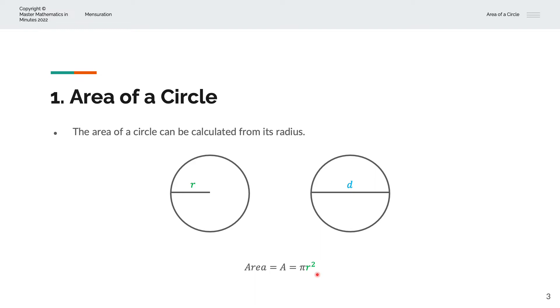And so because the formula is given in terms of r, it's usually easier to work with the radius. And so whenever you are given a diameter, we'll divide that by 2 to obtain the radius and then we can find the area of the circle.